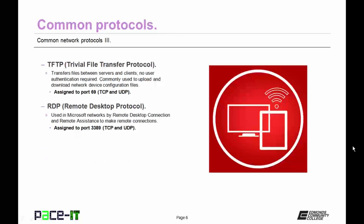Then there is TFTP, Trivial File Transfer Protocol. It transfers files between servers and clients. No user authentication is required, and no encryption is in place. It's commonly used to upload and download network device configuration files. It's assigned to port 69 and uses TCP and UDP at layer 4 as its transport protocol.